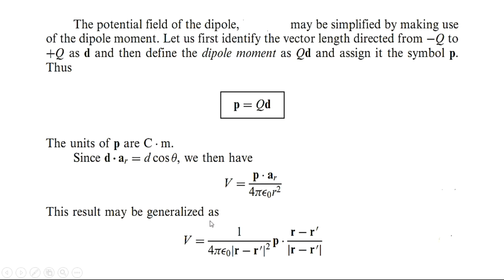This result may be generalized as V = (1/(4πε₀)) · P·(R − R')/(|R − R'|²·|R − R'|), where R is the distance from point P to the center of the dipole and R' represents the location of the dipole center. When R' = 0, the dipole is at the origin. When R' has some non-zero value, R' locates the center of the dipole.